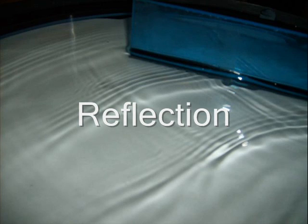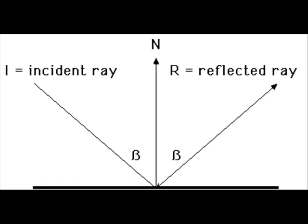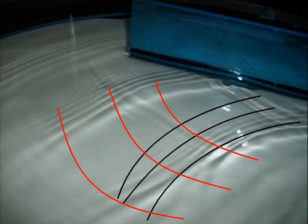Reflection is a simple concept. The angle that the light enters will be the same angle that it leaves. The angle is measured by the normal line, which is perpendicular to the surface at which the light hit.